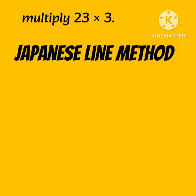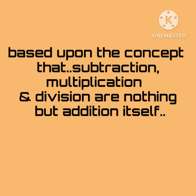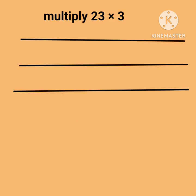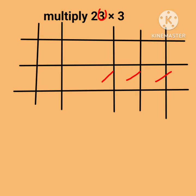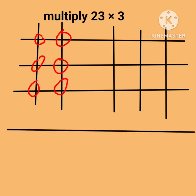Multiply 2 by 3 applying the Japanese line method, based upon the concept that subtraction, multiplication, or division are nothing but addition itself. Draw 3 horizontal parallel lines. Now draw 2 vertical lines first, then again draw 3 vertical lines. Now counting the points of intersections — it comes out to be 6 and 9. Hence the answer is 69... wait, the answer is 6.